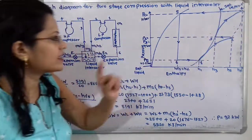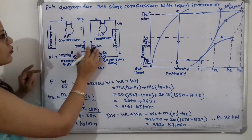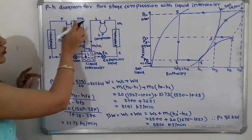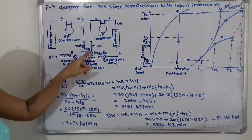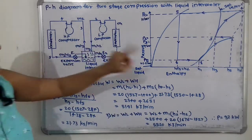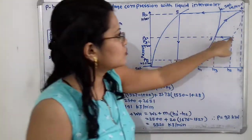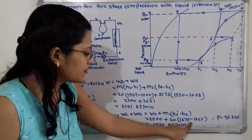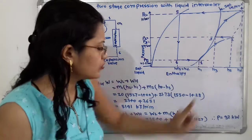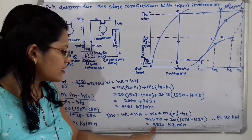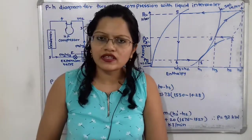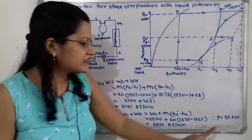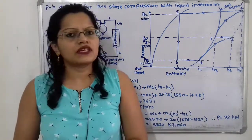Without the liquid intercooler, mass m1 flows unchanged from the low pressure to the high pressure compressor with no additional mass. So WH = m1 × (h2-dash − h2) = 20 × (1676 − 1527) = 2980 kJ/min. Total work = 2540 + 2980 = 5520 kJ/min. Power = 5520 / 60 = 92 kW. This is the answer to the second question.